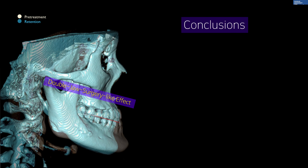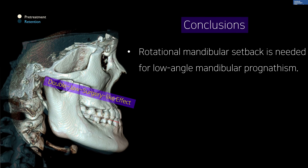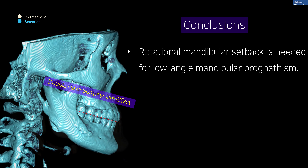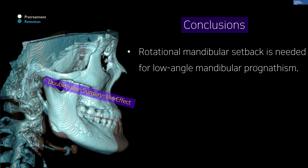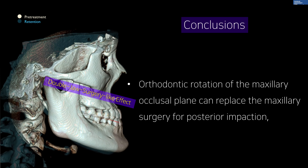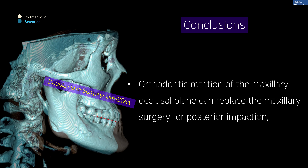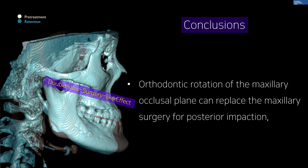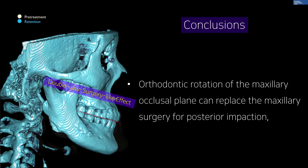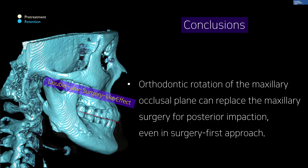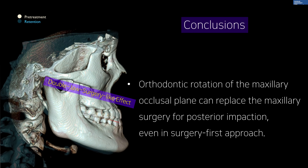Conclusions: rotational mandibular setback is needed for low-angle mandibular prognathism. Orthodontic rotation of the maxillary occlusal plane can replace maxillary surgery for posterior impaction, even in a surgery-first approach. Thank you.